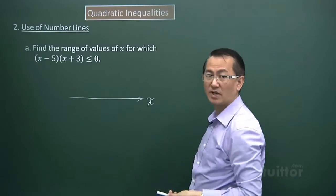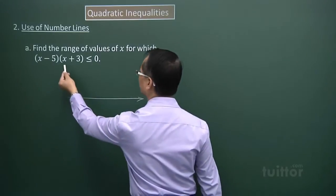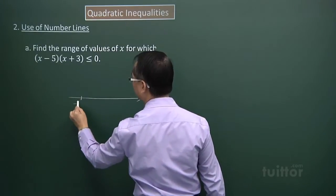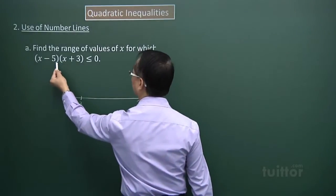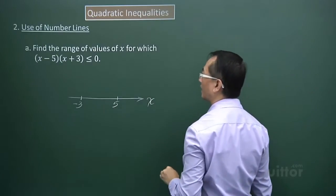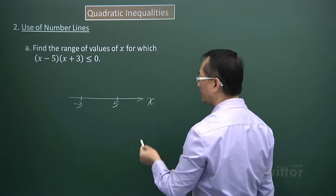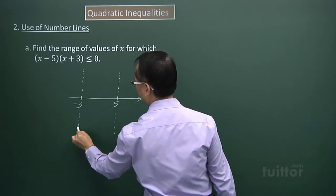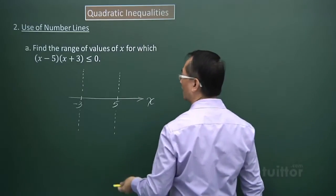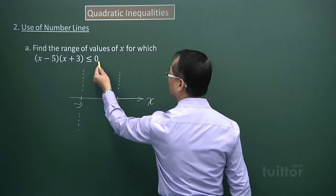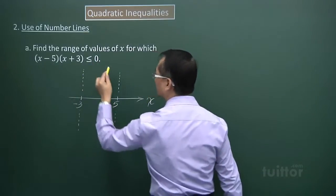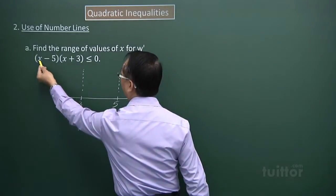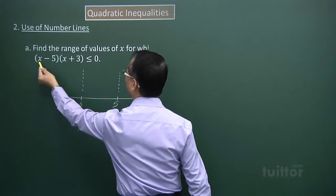There are two points that must be marked out on the number line. The first is where the factor X plus three equated to zero gives negative three. Then this factor equated to zero gives X equals five. Now because of the less than or equal to zero, the product can be zero, which means X can be five because when X is five the whole expression will be reduced to zero.